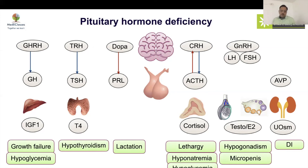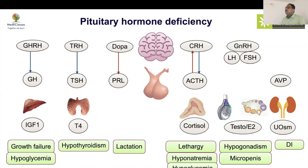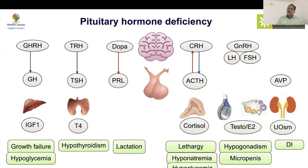Isolated central ACTH deficiency in a child requires extensive rethinking before diagnosis. Isolated TSH deficiency is also very unusual — only TSH-beta gene defects or TRH receptor mutations can cause it. As a rule, a single pituitary deficiency requires evaluation for all others, except that isolated GnRH deficiency can be considered without full workup.